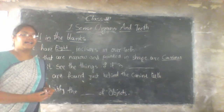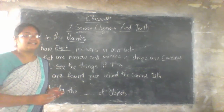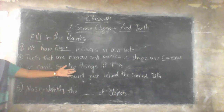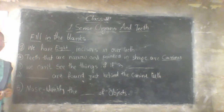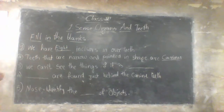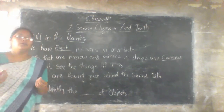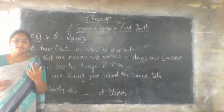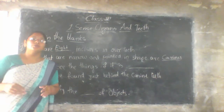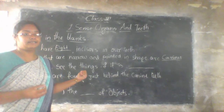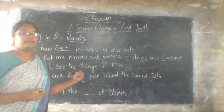Next one: we can't see things if our blank are not working. The answer is eyes — E-Y-E-S. We can't see anything without our eyes.